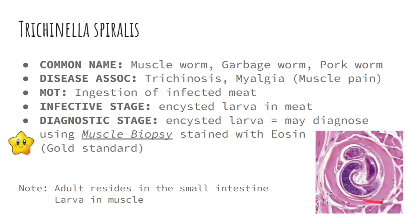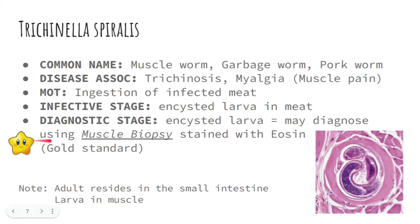This is what the encysted larva looks like under the microscope. This muscle biopsy is the gold standard test for Trichinella spiralis, and it has been a recall question in the board exam before. The gold standard diagnostic test for Trichinella spiralis infection is muscle biopsy.